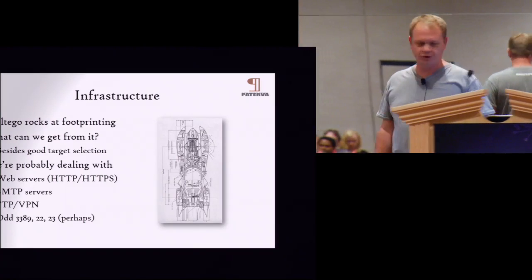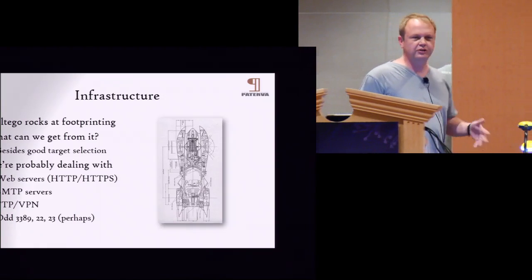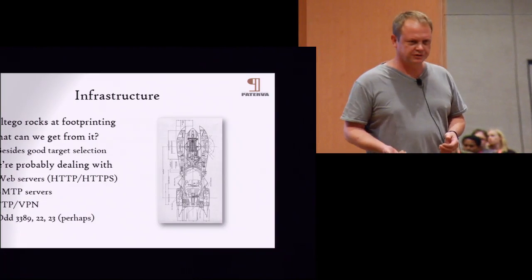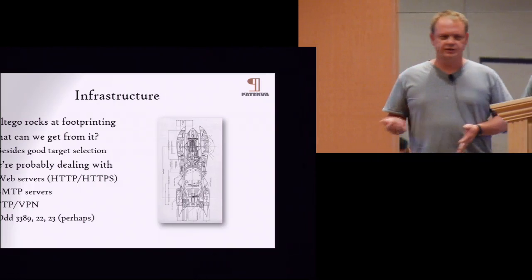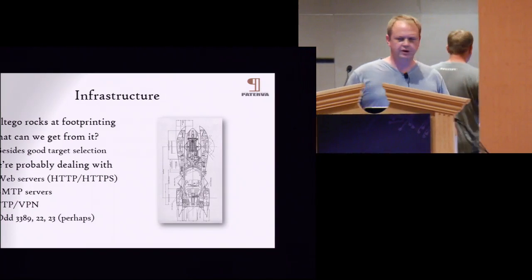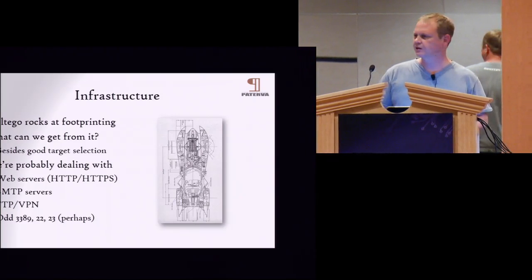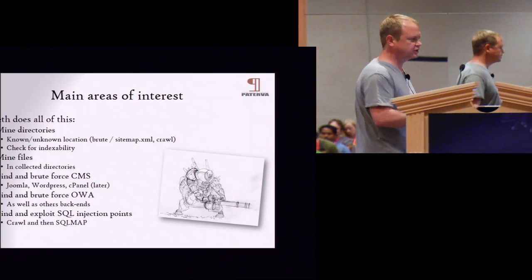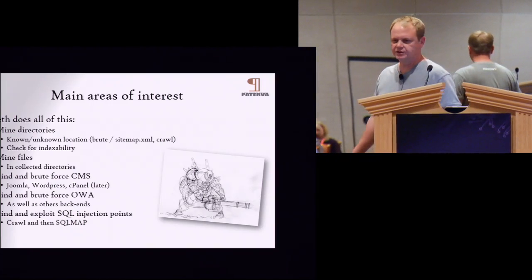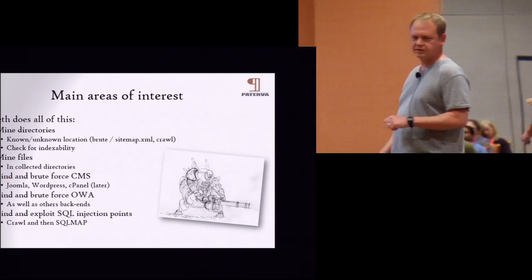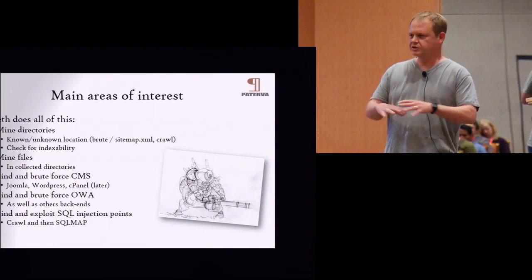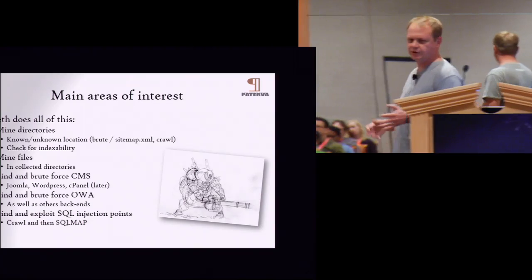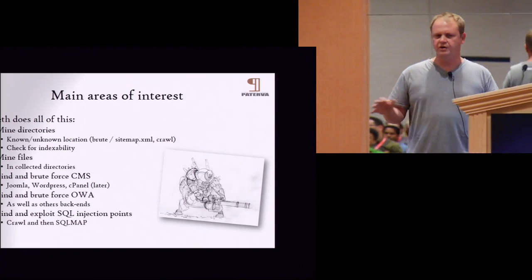We know that Maltego rocks at footprinting. If you're external, in a multinational, looking from an outside black box perspective, you're probably going to hit web servers — lots of web servers. Maybe some SMTP servers, FTP, VPN, 3389, and 22. Teeth basically does the following things: it mines for directories in known and unknown locations. We can take something like sitemap.xml, feed it in, build out the structure of the website, search within directories for other directories, and mine it for files like backup.sql and backup.zip.